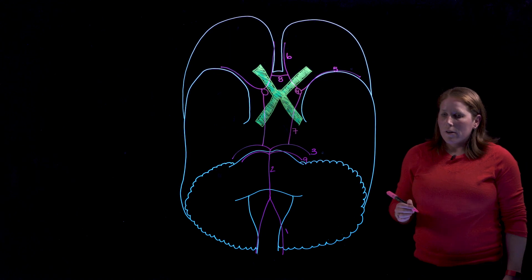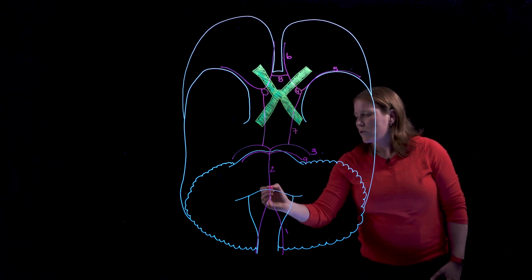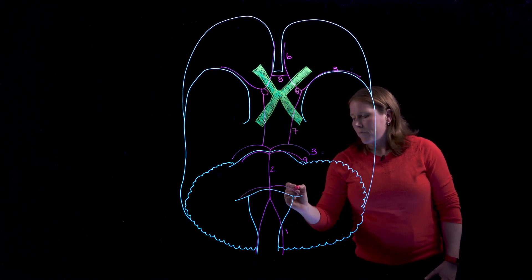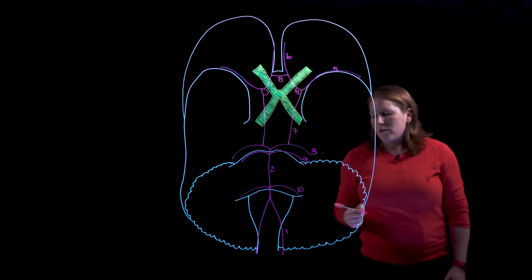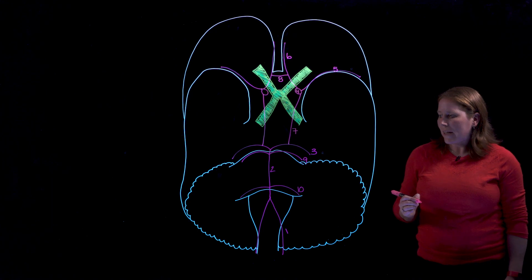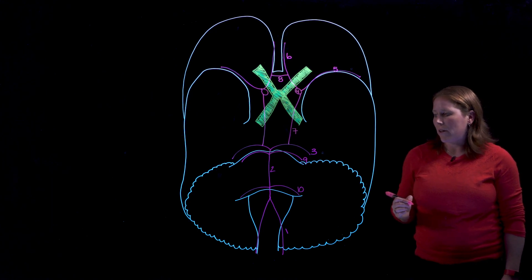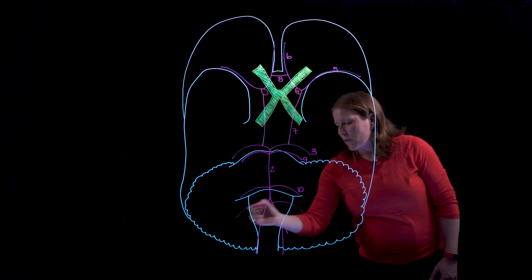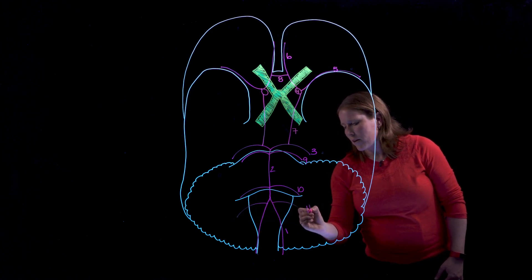You have two pairs of inferior cerebellar arteries so we're going to add a pair here and these are often referred to as AICA which is anterior inferior cerebellar artery